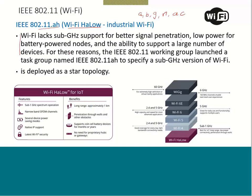For these reasons, the IEEE 802.11 working group launched a task group named IEEE 802.11ah to specify a sub-gigahertz version of Wi-Fi. This Wi-Fi HaLow is basically a sub-gigahertz version of Wi-Fi and is deployed as a star topology. Its features include: sub-1 GHz spectrum operation, narrow-band OFDM channels, several device power saving modes, and native IP support — meaning a device can directly connect to an internet node.